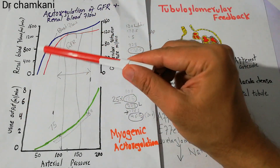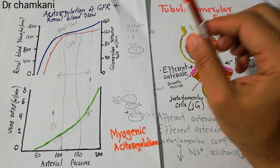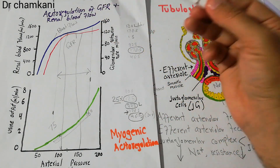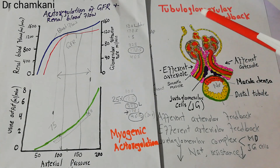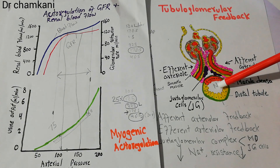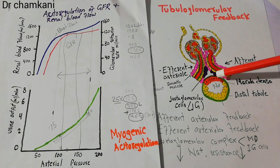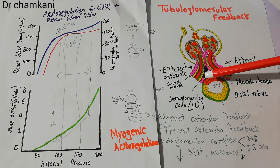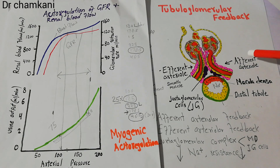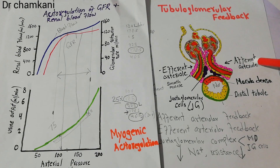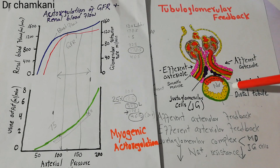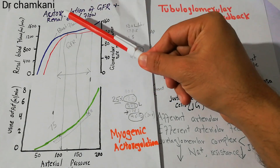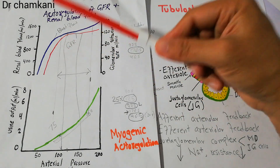We have explained how autoregulation of GFR is maintained. One mechanism is the tubuloglomerular feedback mechanism, in which the sodium level in the distal tubule is sensed through the macula densa. That changing sodium level tries to increase or decrease filtration by adjusting resistance in the afferent or efferent arteriole, maintaining GFR and renal blood flow near normal levels.